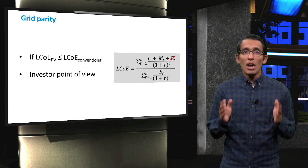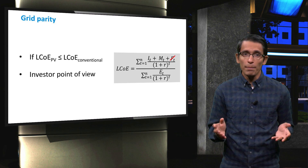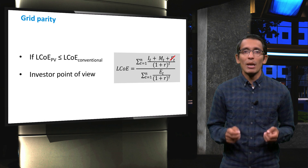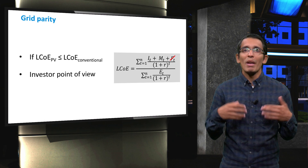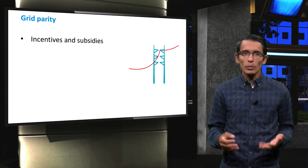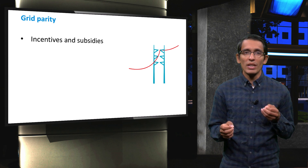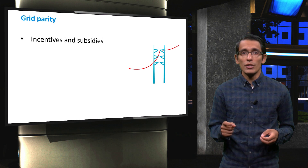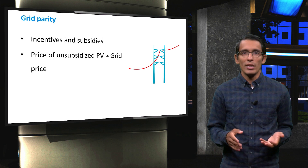Grid parity is when the cost of producing grid power is greater than the cost of producing power through PV. Reaching grid parity is the point where investing in solar power becomes economically desirable, as the investor will make more money over the lifetime of the PV system. Grid parity could also be reached faster with the help of incentives and subsidies. However, true grid parity occurs when the price of unsubsidized PV power matches the grid price.